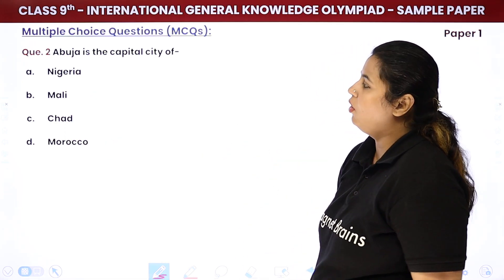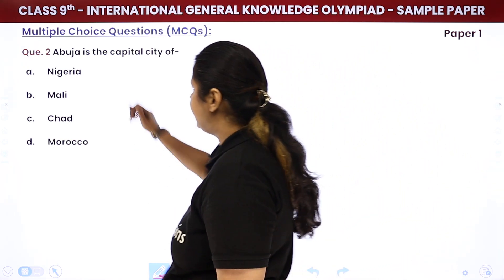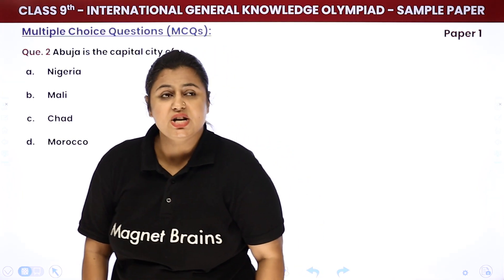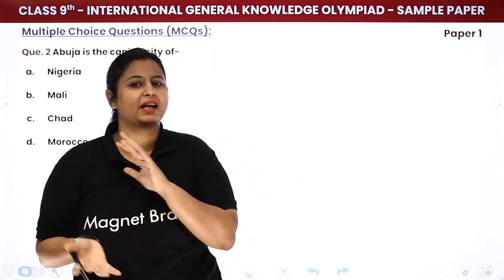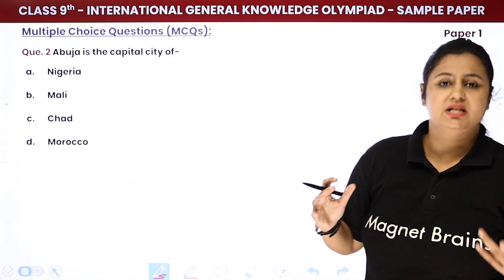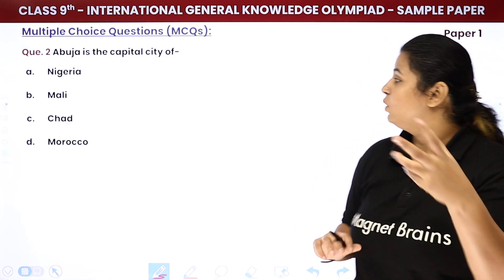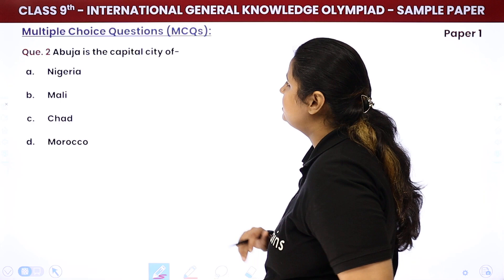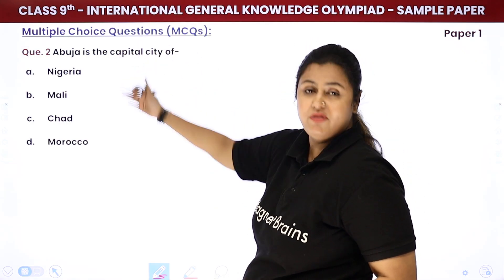Abuja is a capital city of Nigeria. Nigeria is one of these countries. The larger economic capital was Lagos, but when the capital shifted to Abuja it was a very big deal — it is one of the very few countries to have done that, in 1991. Abuja is the capital city of Nigeria.